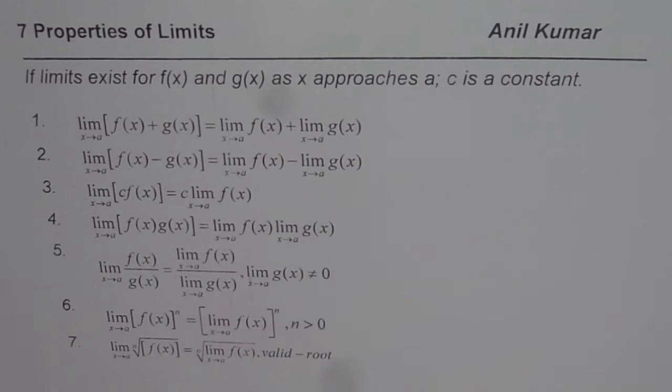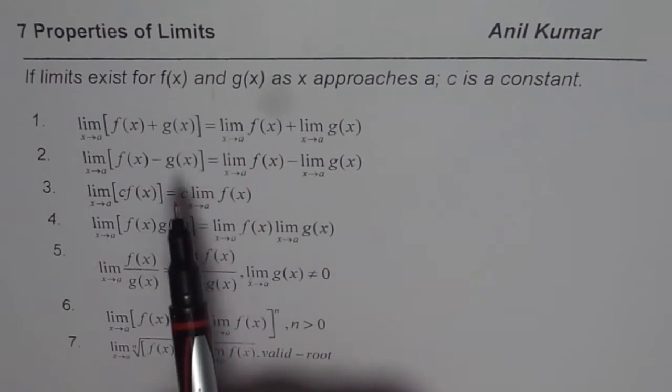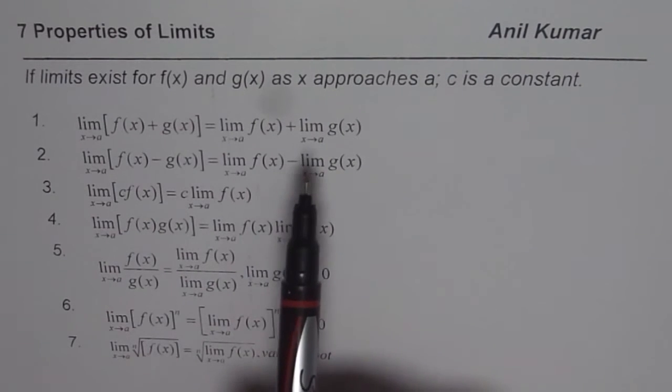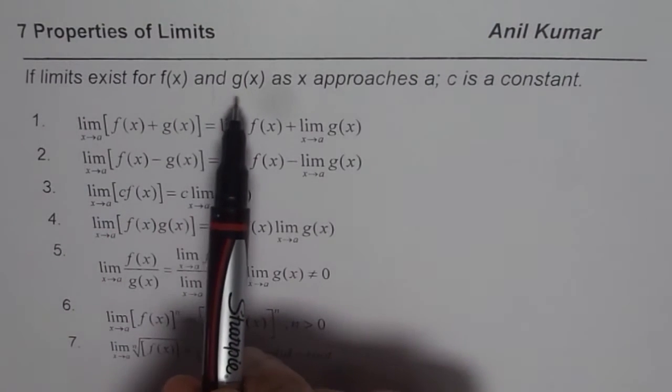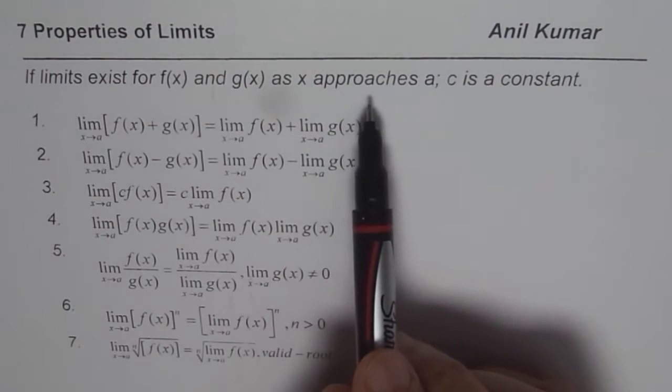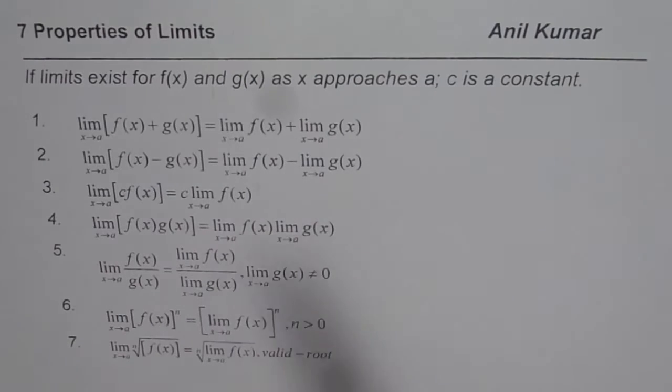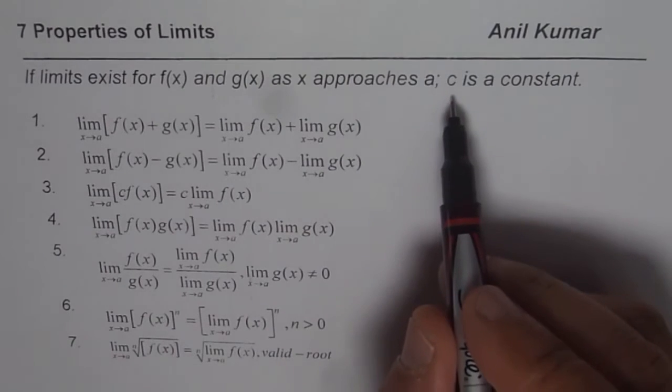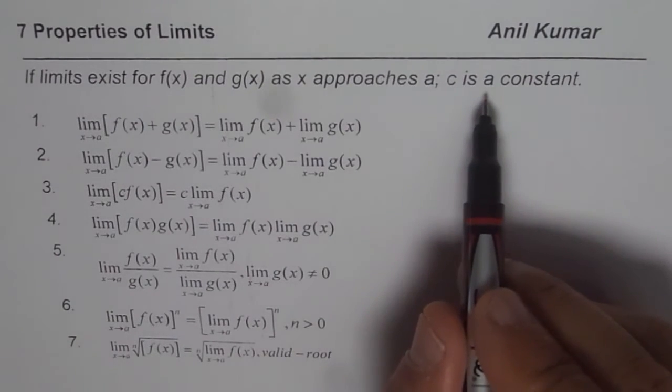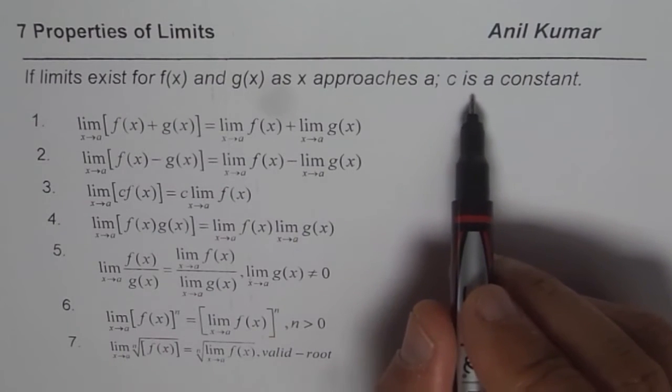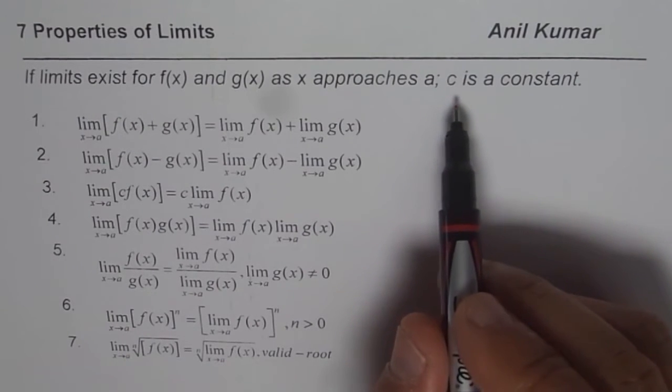These properties are valid if and only if limits exist for f(x) and g(x) as x approaches a. Among these properties you will also find c, which is a constant. The limit for a constant is always the same constant.